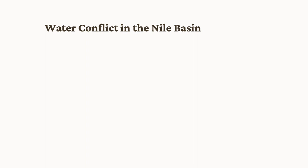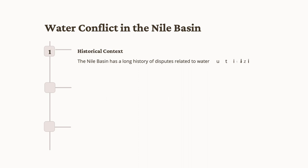Now let's talk about the water conflict in the Nile Basin. The Nile Basin water conflict is a complex and long-lasting issue, showcasing the intricate dynamics of shared water resources and their impact on geopolitical relationships. Understanding this conflict involves examining its historical roots. The conflict has deep historical roots as riparian nations along the Nile have sought to maximize their access to this vital resource. Colonial era agreements, such as the Nile Waters Agreement of 1959, favored upstream nations like Egypt and Sudan, creating tensions with downstream nations.